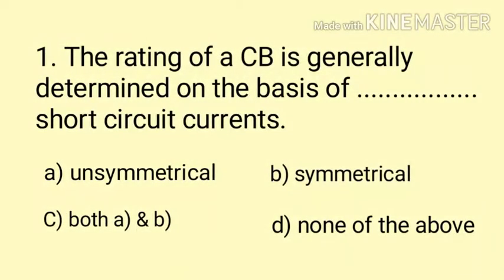Question number 1. The rating of a circuit breaker is generally determined on the basis of dash short circuit currents. Option A: unsymmetrical. Option B: symmetrical. Option C: both A and B. Option D: none of the above. Here the correct answer is Option B — symmetrical.